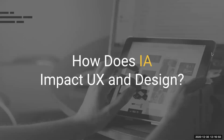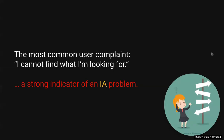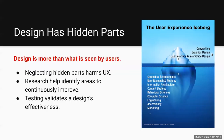So how does Information Architecture impact user experience and design? One of the most common complaints about websites not working is: 'I cannot find what I'm looking for.' That's a strong indicator of an information architecture problem. What you see superficially is not necessarily the same as the underlying system and what brought it about. Neglecting those hidden parts can harm user experience. Research helps us identify areas to continuously improve, and testing validates the design's effectiveness. Failing early is an important factor — if you know ahead of time where your shortcomings are, you can correct them sooner and suffer fewer losses.